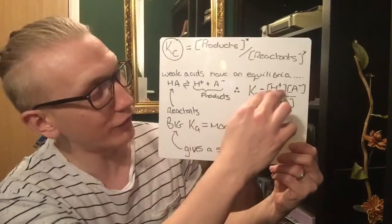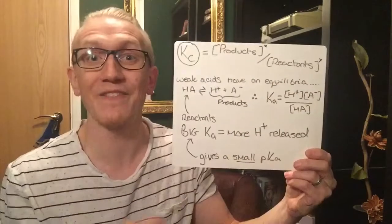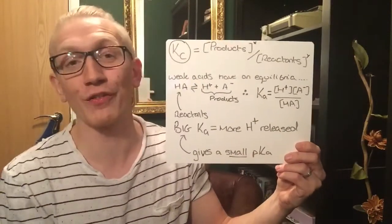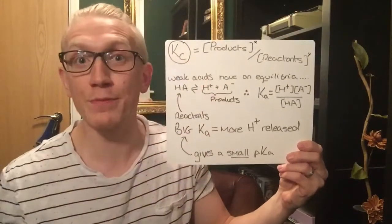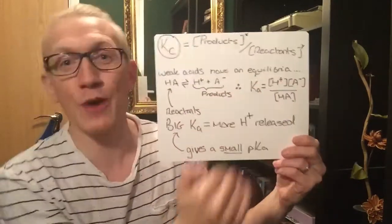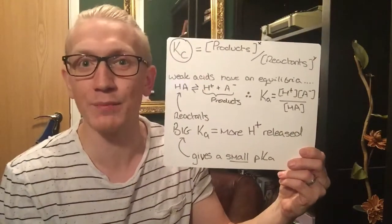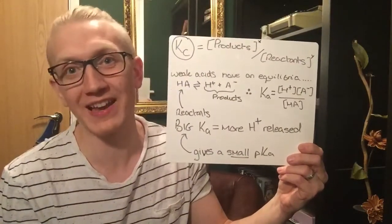What that allows us to do then is rearrange this very easily to get a concentration of H+ ions. So we can merge this topic of Kc with pH by considering that a weak acid has an equilibrium for its own dissociation.